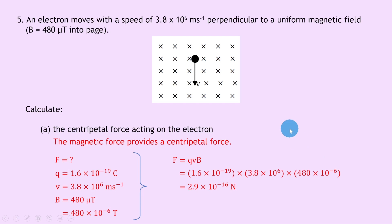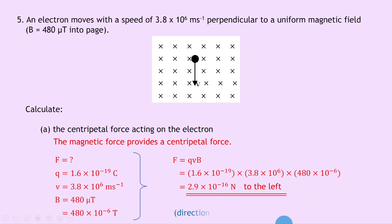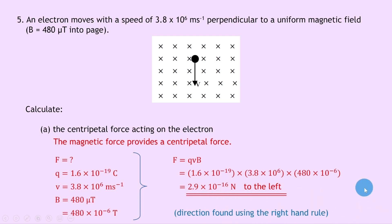Force is a vector, so using the right-hand rule: point your index finger into the page, move your hand so your middle finger points downward — your thumb points to the left. So the direction is to the left. Final answer for part a: 2.9 times 10 to the minus 16 newtons to the left, found using the right-hand rule.